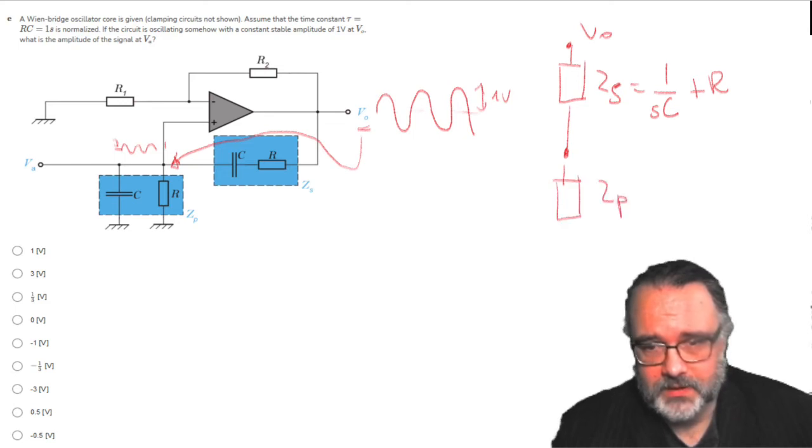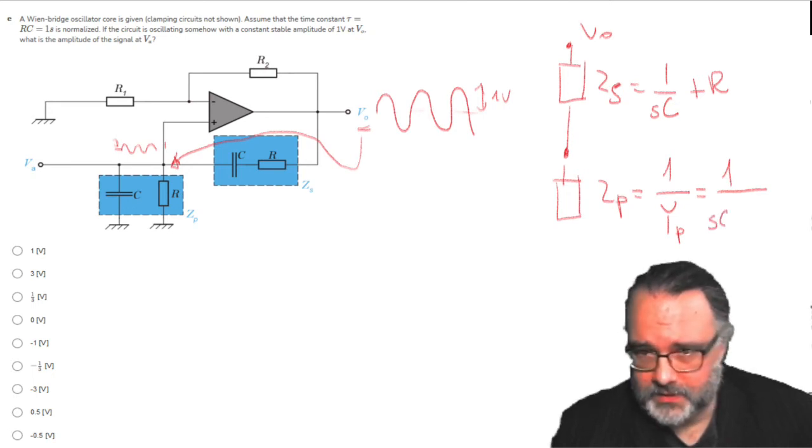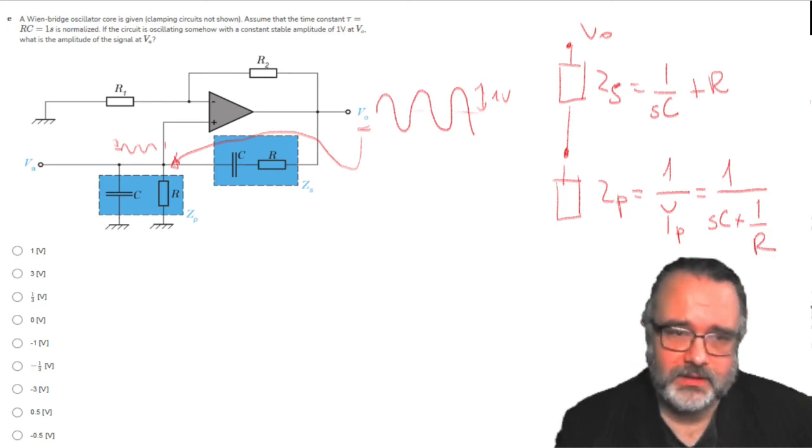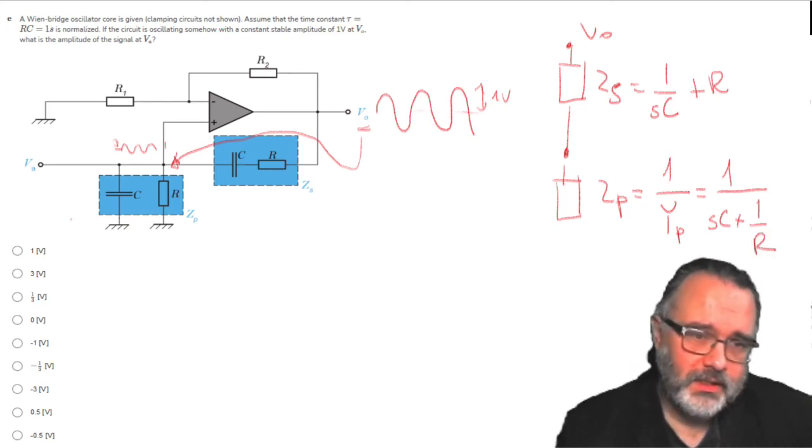And then I'll have another impedance, which is Zp, and it will be 1 over Yp. And it will be equal to 1 over R. Now I have the conductance of the capacitor plus the resistance, something like this, because here C and R are in parallel.